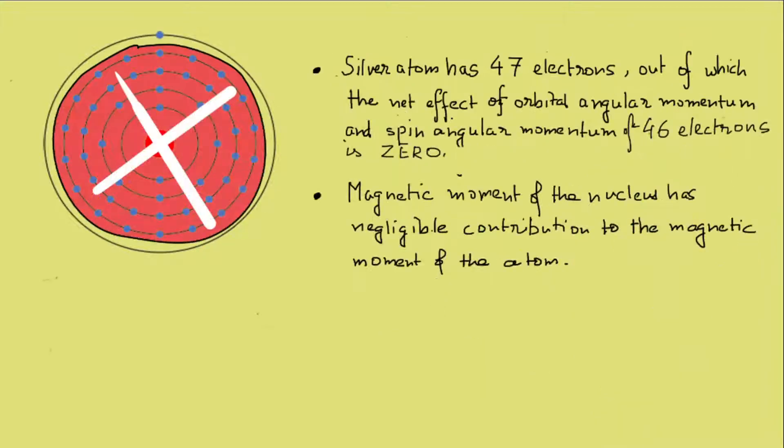Hence, the resultant momenta of the 47 electrons will dictate the magnetic moment of the silver atom. However, 46 of the electrons cancel each other's spin and orbital angular momentum out. The nucleus too has negligible influence over the magnetic moment of the atom due to its much larger mass compared to the electron. Thus, only the 47th electron contributes to the angular momentum of the silver atom.